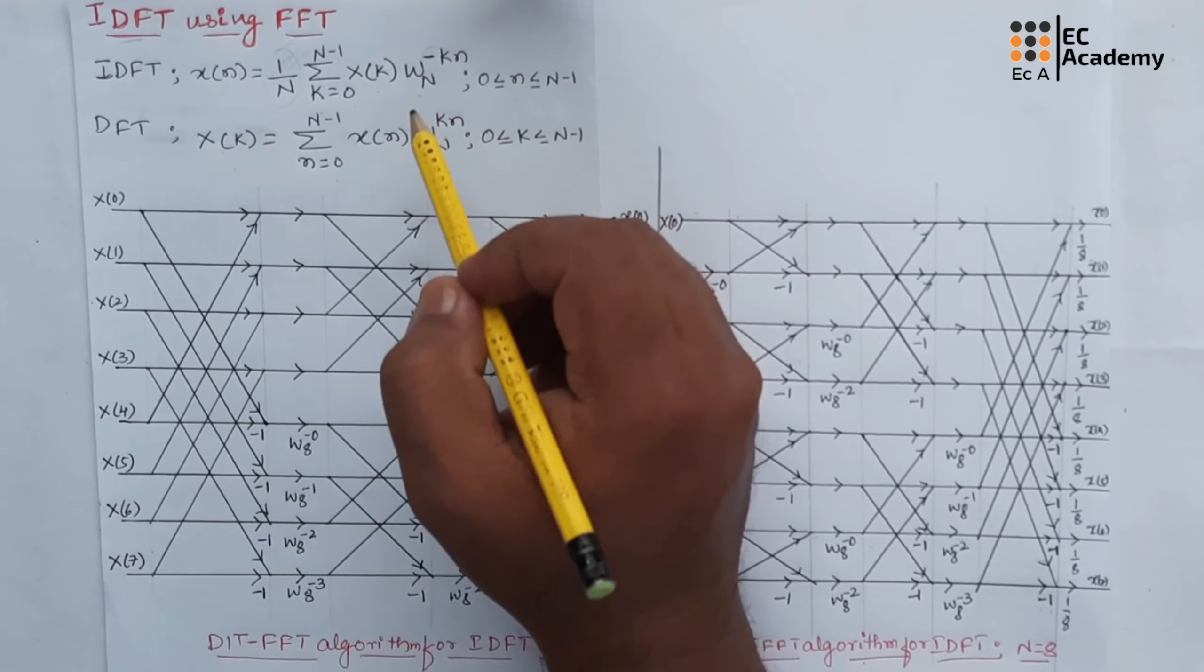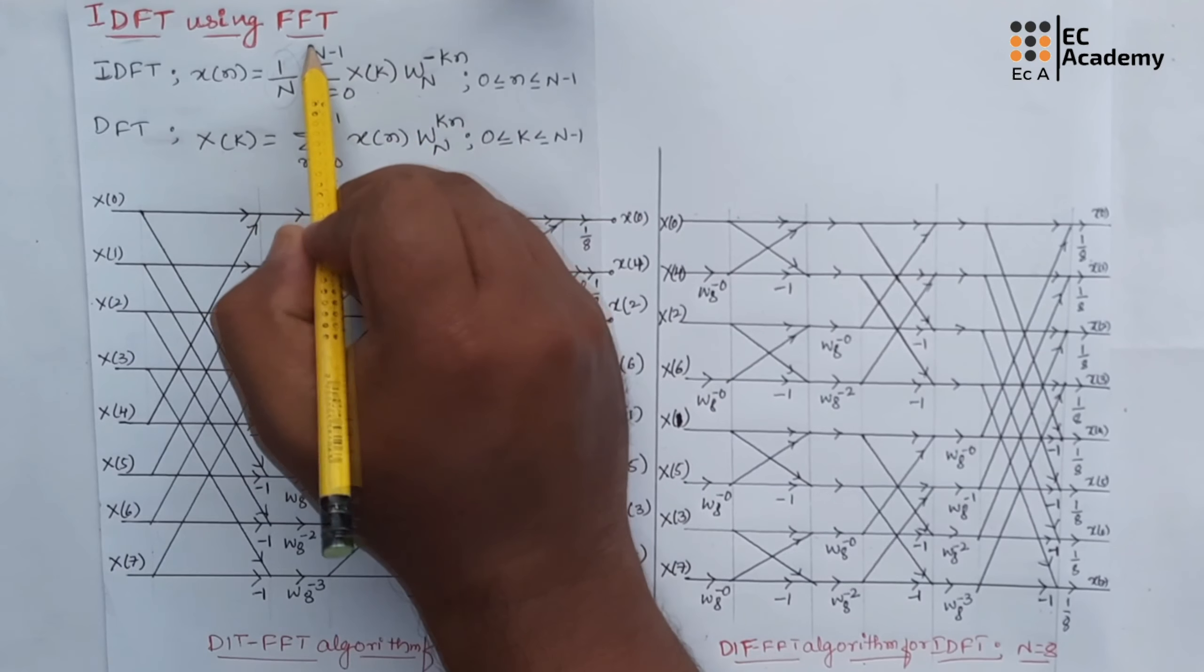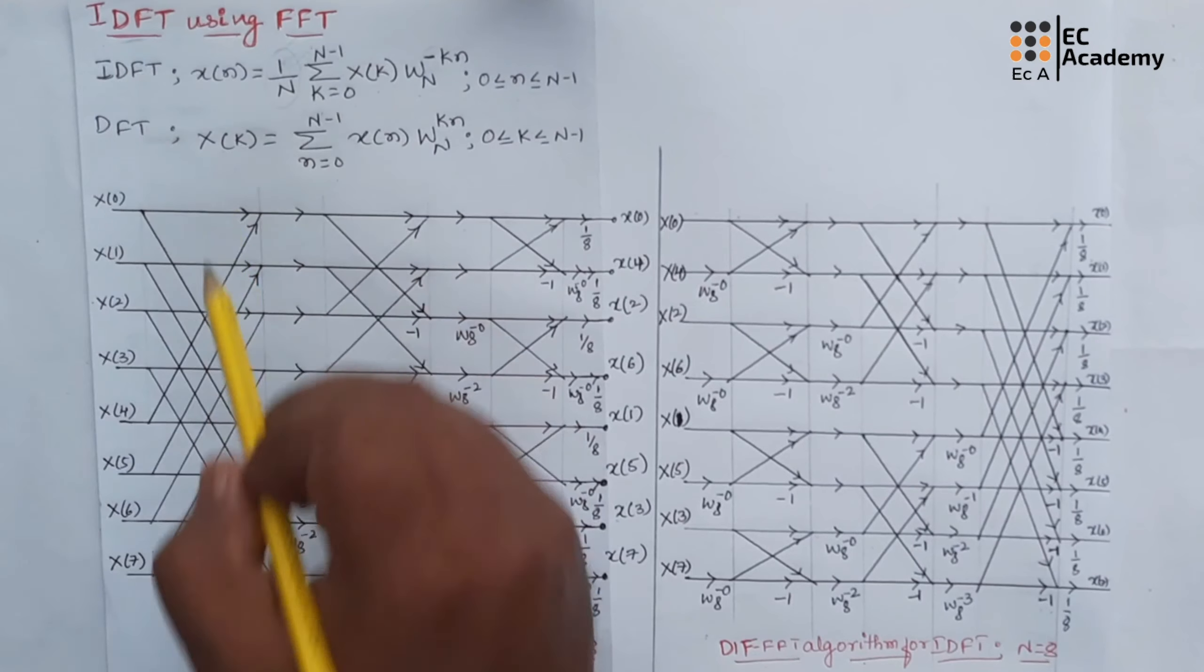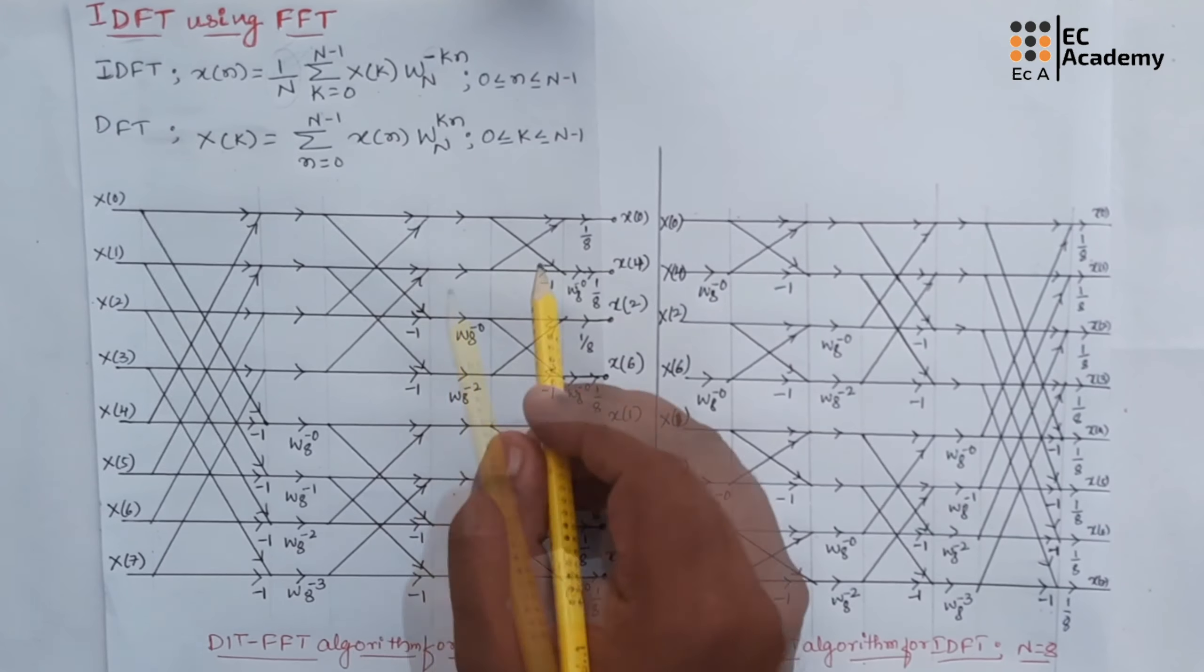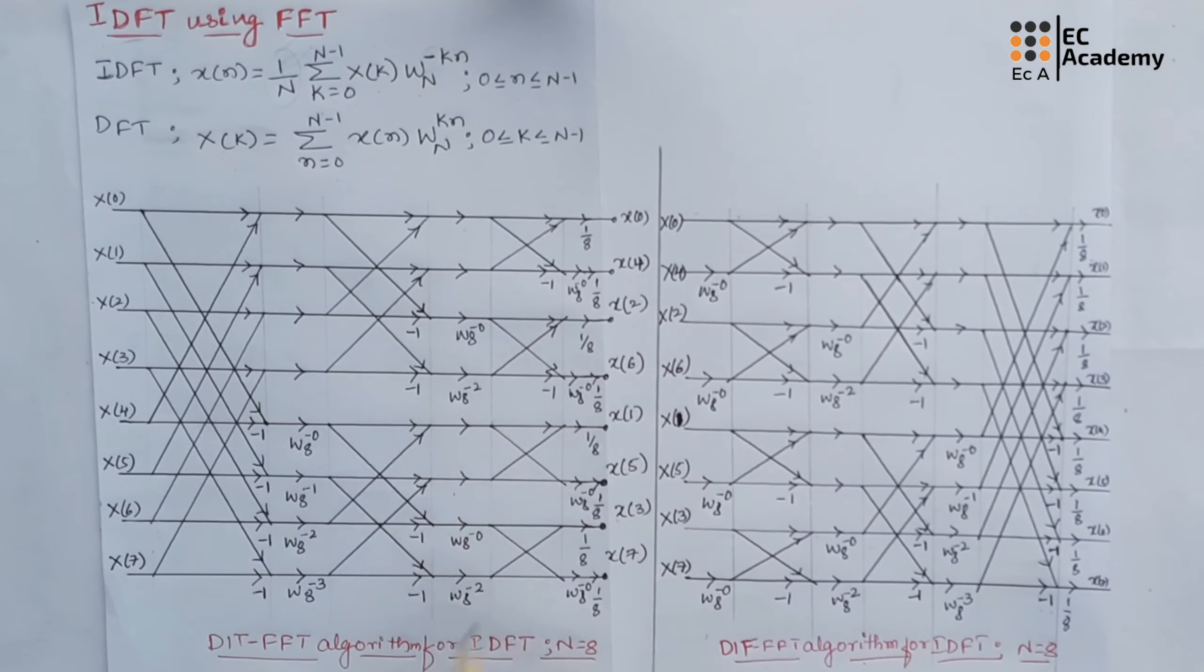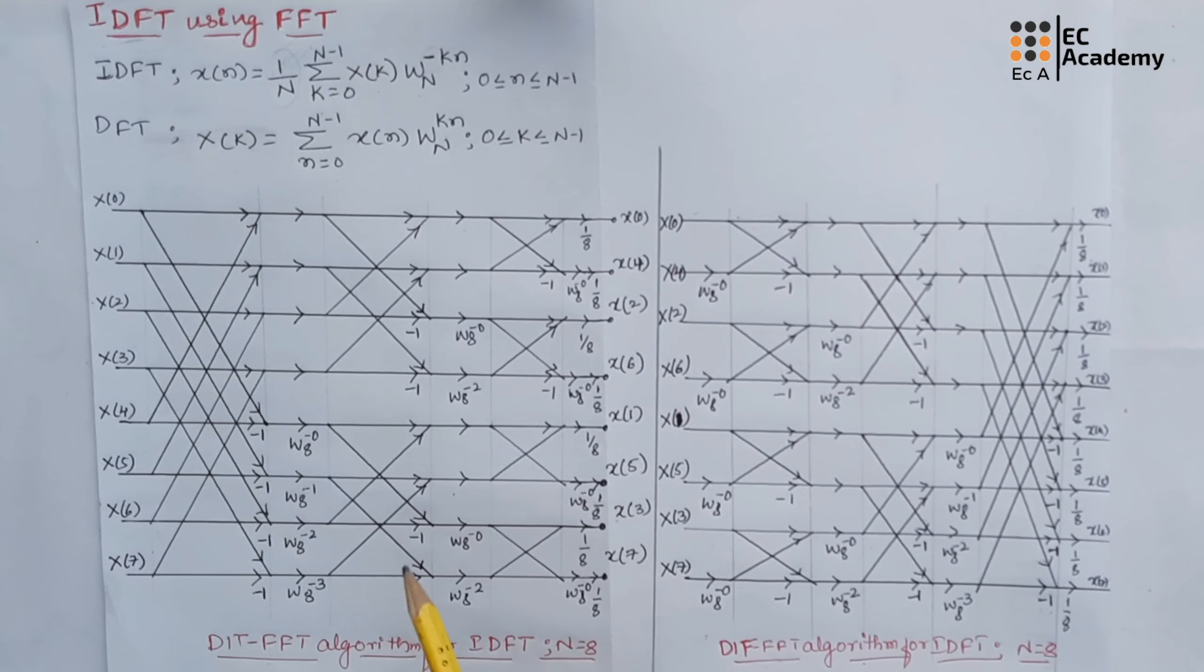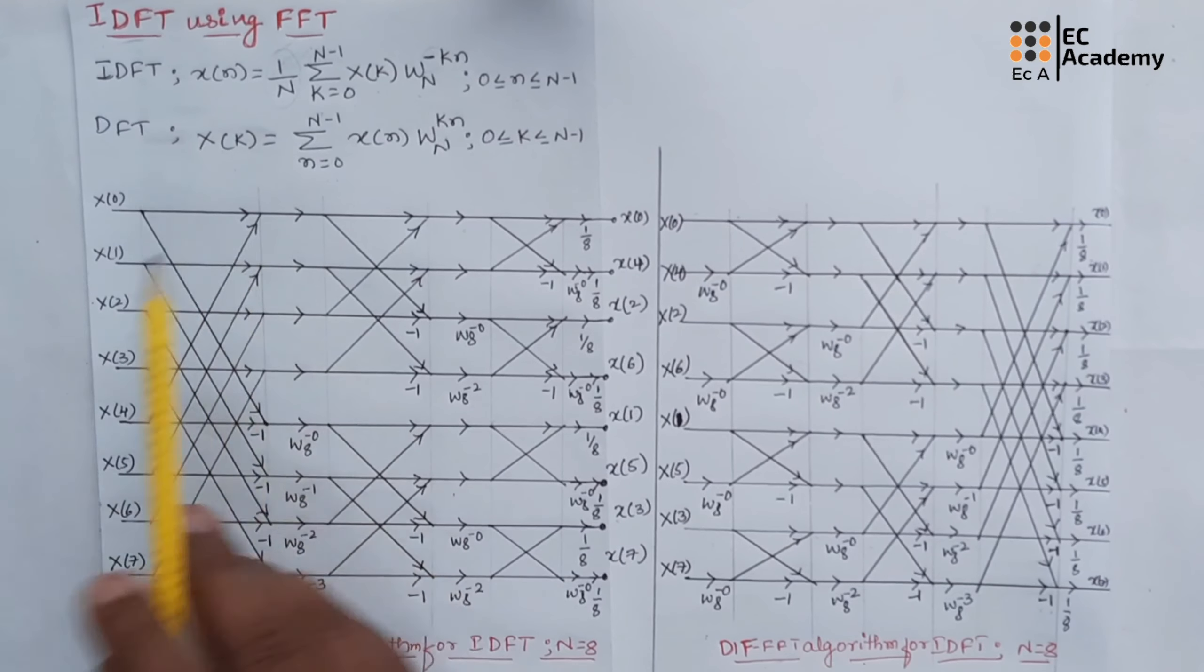Therefore, FFT algorithm for computing DFT can be converted into FFT algorithm for computing IDFT by making few changes. The first change is reversing the direction of flow graph. You can take DIT-FFT as well as DIF-FFT. For these two flow graphs, first thing is you need to change the direction of flow graph. You can observe here the direction of flow graph is changed.